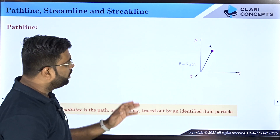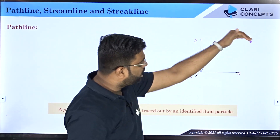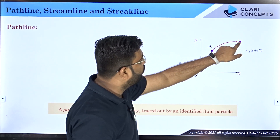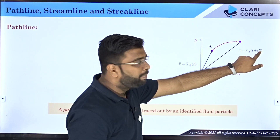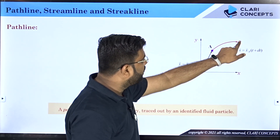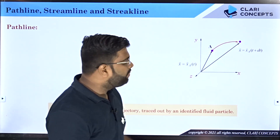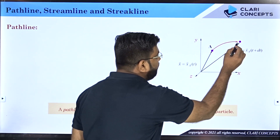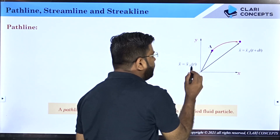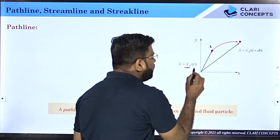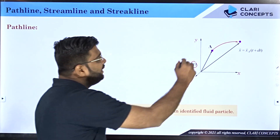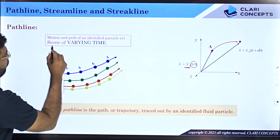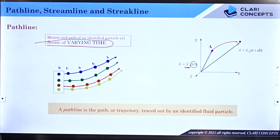Along the flow, this particle travels with respect to time to another position. It has traveled to this position, found at time t plus dt. The path that the particle has followed is this red color path. This red color path is known as the pathline of the identified particle which was found at coordinate xA at a given time t. The pathline is traced over a period of time, so it is a scene of varying time.